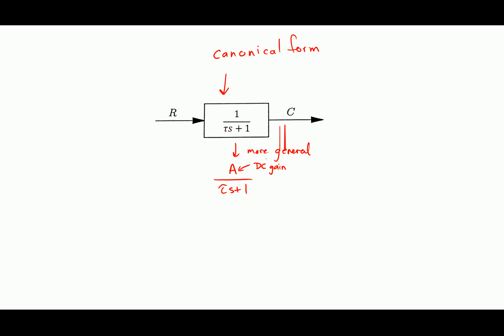S equals 0 corresponds to DC, low frequency. So that canonical form — I'm going to study that. In general, my real world, as I like to refer to it, is the time domain. Typically, what I'm really interested in is what does C of T look like? For a system with 1 over tau*S plus 1, which might be an RC circuit, that has a differential equation that looks like this.